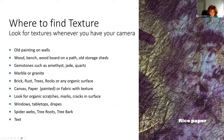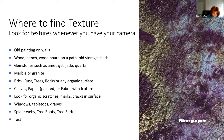Look for anything that has organic scratches, marks, or cracks in the surface. Windows can produce some interesting effects — get close to reduce reflection, especially if there's rain or mist on it. Your tabletop, stripes, spiderwebs — I've done work combining spiderwebs and tree roots.